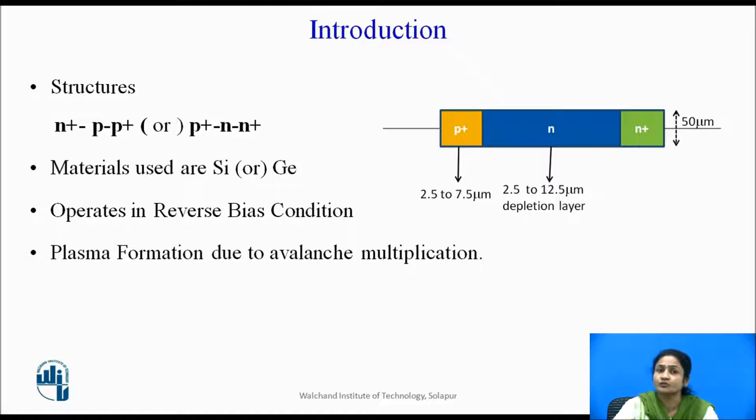which is formed due to the formation of the charge carriers between the electrons and holes after at the point of the threshold voltage, which we are calling as the avalanche breakdown voltage. At the avalanche breakdown voltage, plasma formation takes place in this diode.